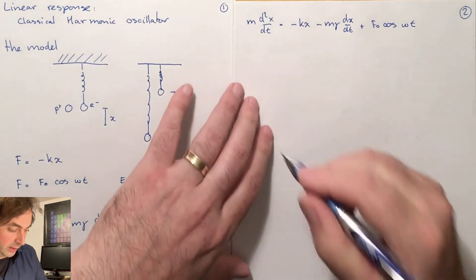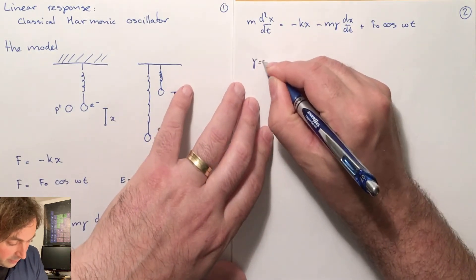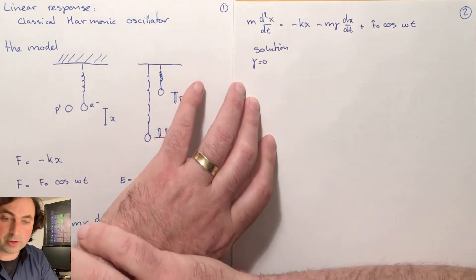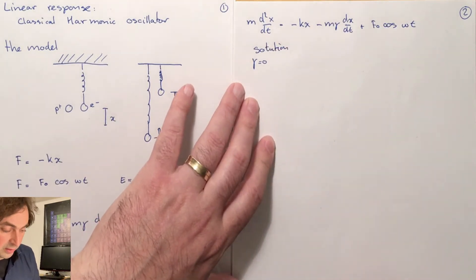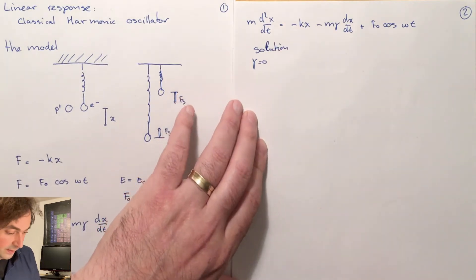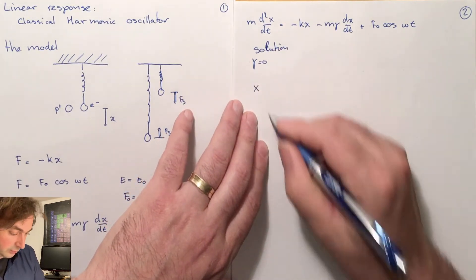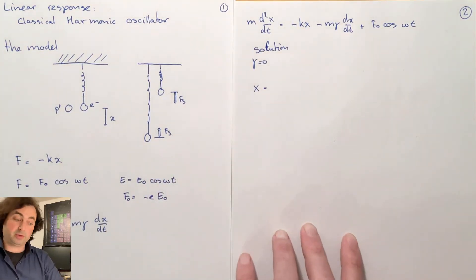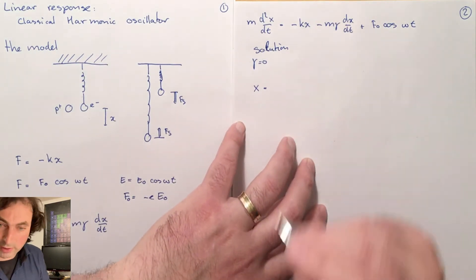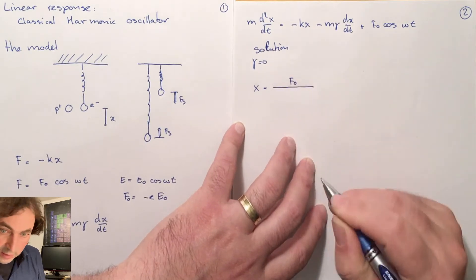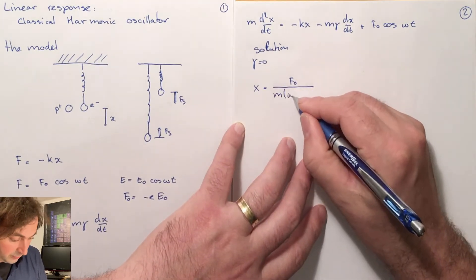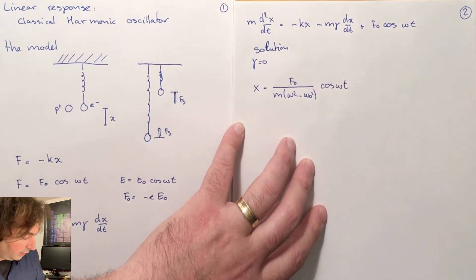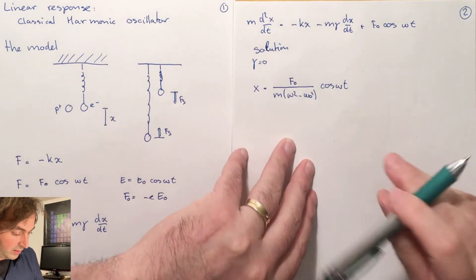As a first example we'll have a look at the solution for gamma equal to zero. Once we have those solutions we will include the case where friction is non-zero. I assume that you have seen these differential equations before and I will just give you the solution — you can put them into those equations to test that indeed the equations I write down solve this differential equation. We find a term that is the steady state solution.